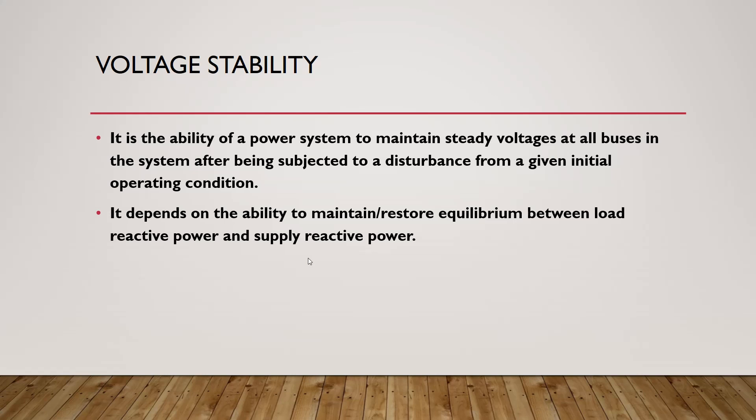Remember that reactive power is highly related to voltage. The reactive power of our load Q equals the voltage squared divided by the load reactance X: Q = V²/X. So Q of our load depends on our voltage. If our supply is able to satisfy the reactive power required by the load — giving it enough Q — then we can have a steady-state voltage.